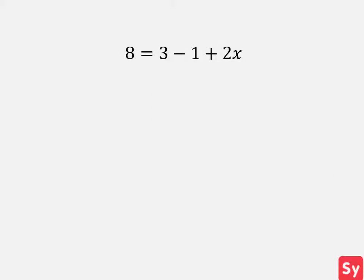Next example, we have 8 equals 3 minus 1 plus 2x. There is nothing to distribute, so we go on to combining like terms. We simplify 3 minus 1 to 2. The equation is now 8 equals 2 plus 2x.